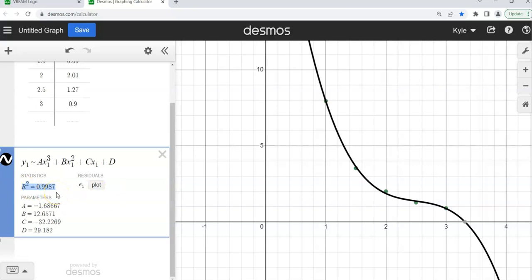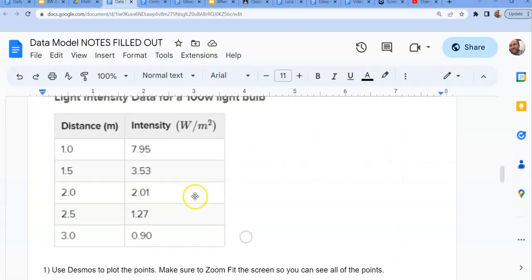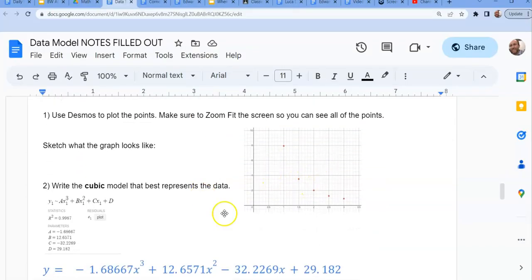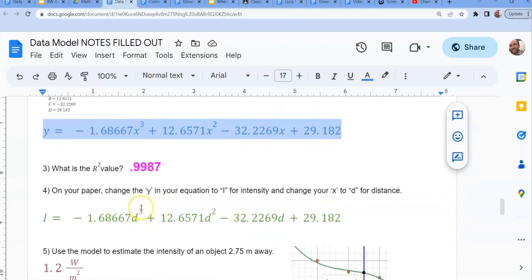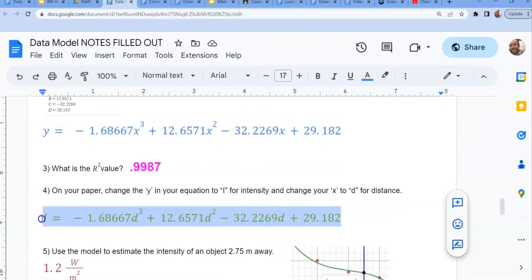The next thing says on your paper, your paper, change your y values from a y to an i and change your x's to a d. So this is just x's and y's jargon. Like what does that mean as far as the problem? The problem is talking about distance and intensity. So let's go back to our notes. There's the little sketch you drew. We want the cubic model. So I'm writing the model. I'm taking my a's, b's, and c's out and putting them where they belong.